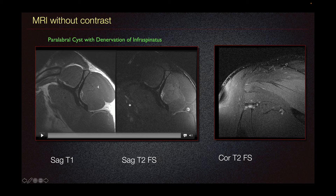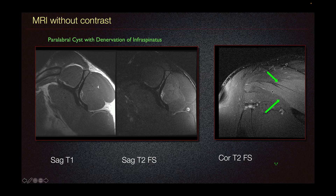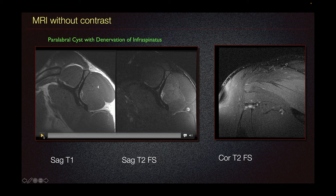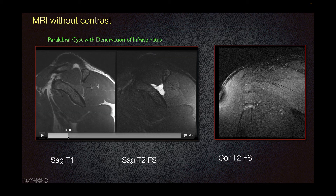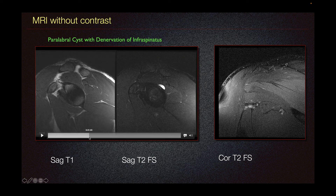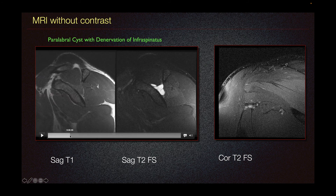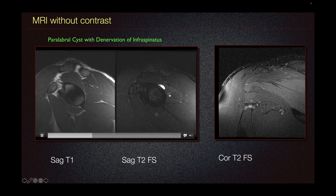When we look at our sagittal T2 fat sat imaging, we can appreciate increased T2 signal within the infraspinatus here that is concerning for denervation changes. This can also be seen in our coronal T2 fat sat — it is a little bit more hyper-intense or bright compared to the surrounding muscles here. When we look at it closely, we can see that the paralabral cyst is in the spinoglenoid notch, and that results in denervation within the infraspinatus.